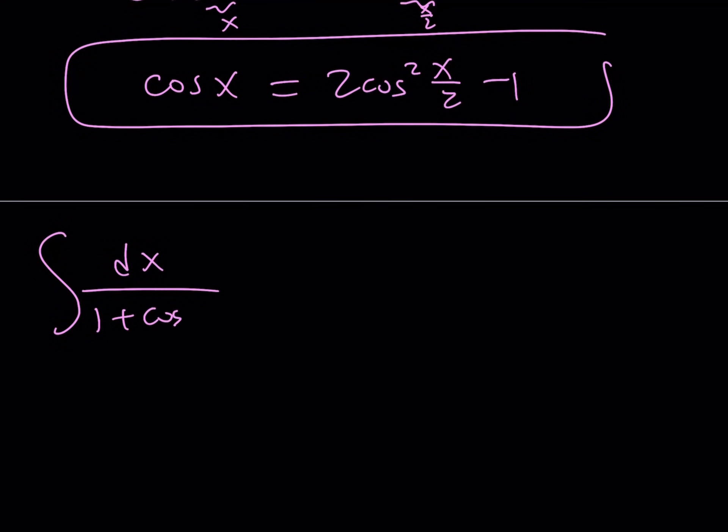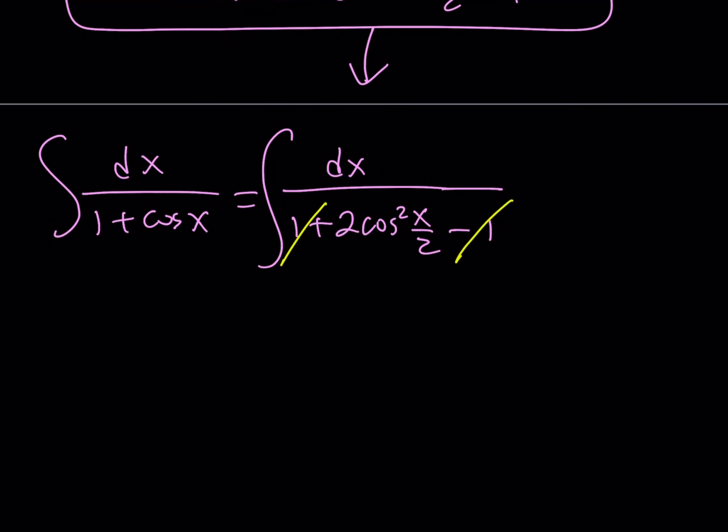I'm going to replace cosine x with 2 cosine squared x over 2 minus 1. The 1 and the negative 1 cancel out, leaving us with something nice. It's 1 half times dx over cosine squared, but 1 over cosine squared equals secant squared. So we write it as 1 half multiplied by secant squared x over 2 dx.